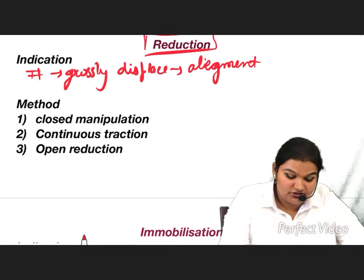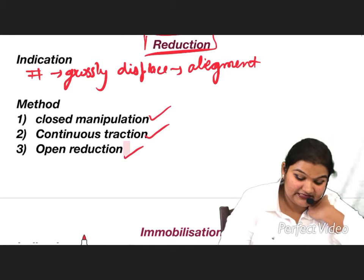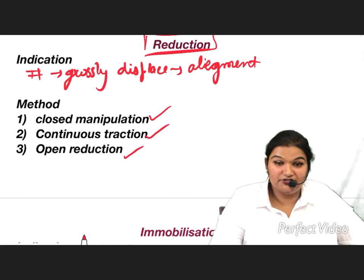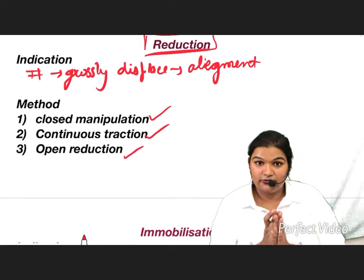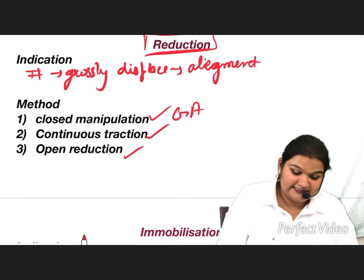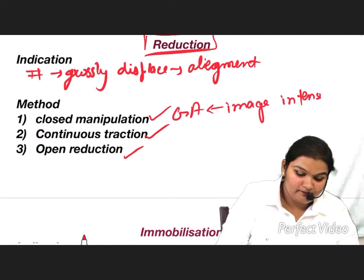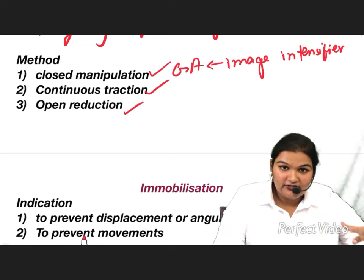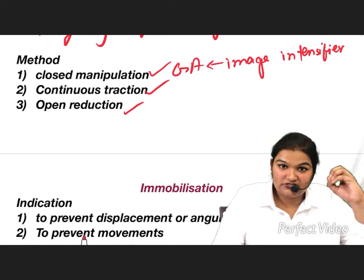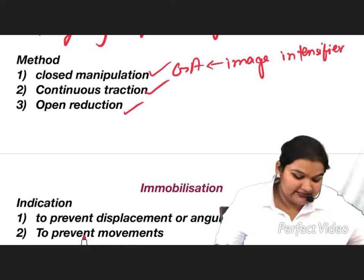There are three methods of reduction. First is closed manipulation: without opening the fracture, you feel through the soft tissue, manipulate the ends, and bring them together. This is done under general anesthesia with image intensifier guidance. After reduction, the part is immobilized with a cast and slings.